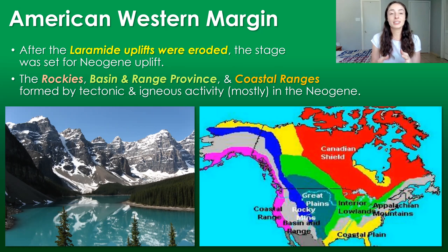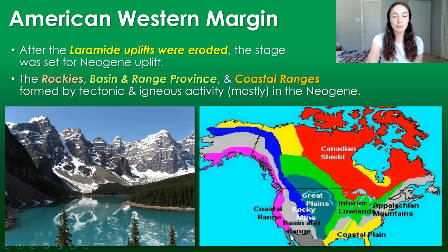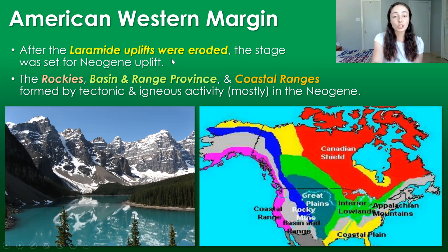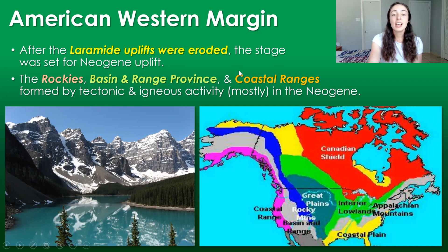Starting with North America, specifically the western region, after the third stage of Cordilleran mountain building — or the Laramide orogeny — which was a mountain-building event due to subduction under the western margin of North America from the Cretaceous to the Eocene periods, or late Mesozoic to early Cenozoic, after the uplifts caused by that orogenic event were leveled by erosion, there was a blank slate ready for Neogene uplift. During this time, the Rockies, the Basin and Range Province, and coastal ranges uplifted and formed by tectonic and igneous activity in the Neogene.